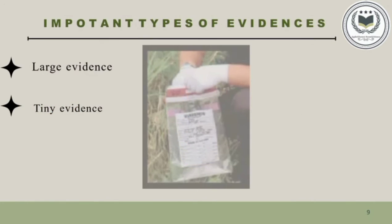Important types of evidence often found are large evidence and tiny evidence. Large evidence includes human remains, the potential murder weapon, newspaper, clothing, banknotes, etc. Tiny evidence — often it's the tiny bits of evidence that end up being the most important. Things like cigarette butts, coins, scraps of paper, teeth, rings, bits of vegetables, charred remains, fibers, bullet or blade fragments, glass, etc.